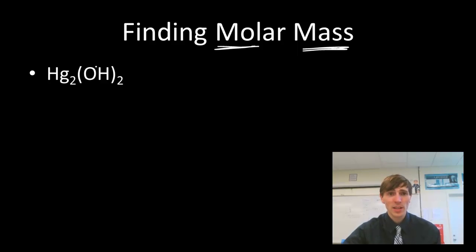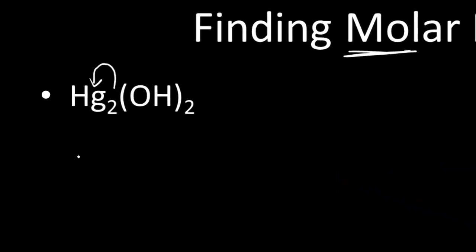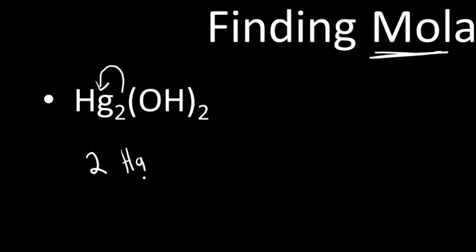I have metals, nonmetals, this is actually an ionic compound. What I need to do is I need to count up how many of each element I have. So I'm going to look at the subscripts, and the subscripts tell me how many of what's directly before them. So I have two atoms of Hg in this formula unit, and I look at this two over here behind the OH, and this two actually hits everything within the parentheses.